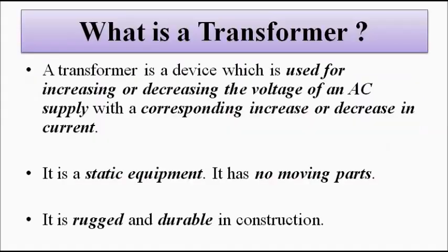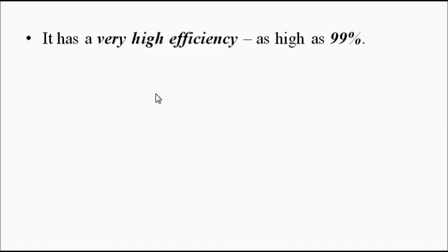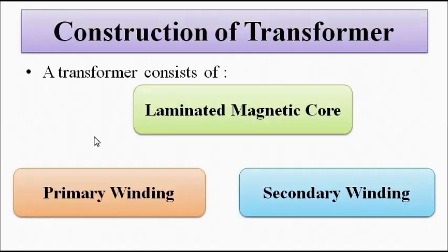We will just have a quick refresh. Basically, a transformer is a sort of energy conversion device which is used for increasing or decreasing the voltage of the input AC supply given to the primary winding, with a corresponding increase or decrease in the primary and secondary current. It is a static equipment with no moving parts, simple construction, and very high efficiency. The construction consists of three main parts: the laminated magnetic core, the primary winding, and the secondary winding.